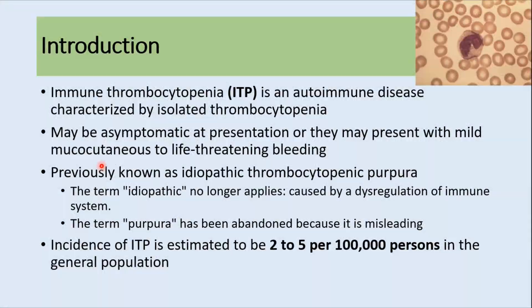Today we'll discuss ITP, which is an autoimmune disease characterized by isolated thrombocytopenia. Patients may be asymptomatic at the time of presentation or they may present with mild mucocutaneous to life-threatening bleeding. This disease was previously known as idiopathic thrombocytopenic purpura, but nowadays this term is not used because we know the cause, which is dysregulation of the immune system, and purpura might not be present in all patients. So nowadays the term immune thrombocytopenia is preferred.